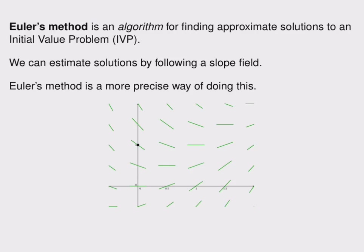In the previous section, 7.2, we found that we could estimate solutions to a differential equation by following a slope field. If we had an initial condition, we could follow the rough trend of the slopes and get an idea of what a solution would look like. Euler's method is a more precise way of doing this.